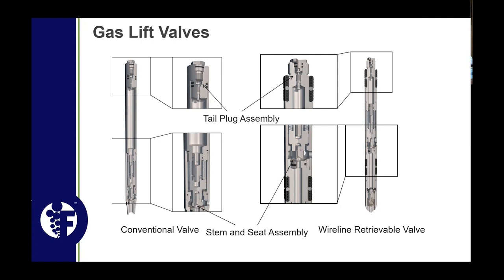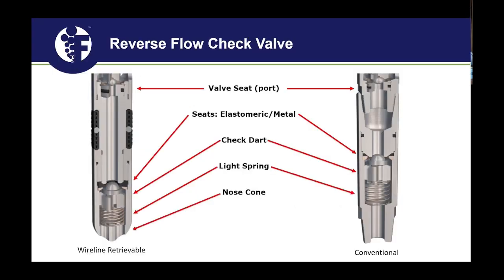When picking port sizes, don't just base it on tubing size — look at the parameters of the well and how much injection volume gas you're going to need to optimize that well over time. That's something operators want to discuss with their vendors. The check valve assembly on a wireline retrievable valve is one integrated piece, whereas on a conventional setup it's a separate piece that threads into the gas valve and then into the mandrel.